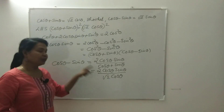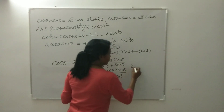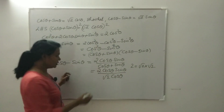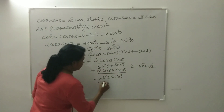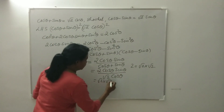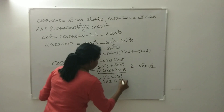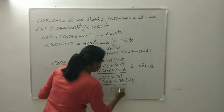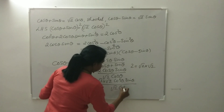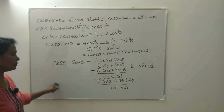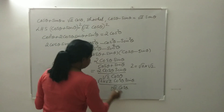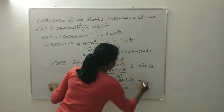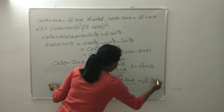Since cos θ + sin θ = √2 cos θ, we substitute that value here: 2 cos θ sin θ divided by √2 cos θ. We know that 2 = √2 × √2, so we write √2 × √2 cos θ sin θ divided by √2 cos θ. Cancelling √2 and cos θ, we get √2 sin θ.